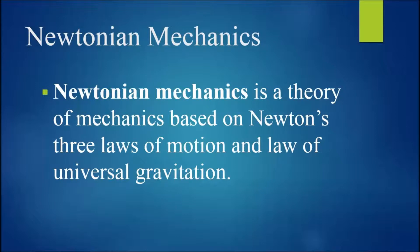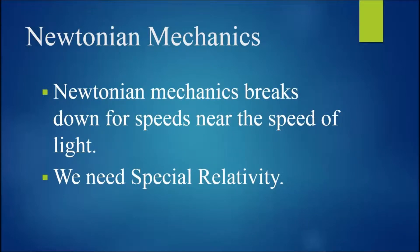So, Newtonian mechanics is a theory of mechanics based on Newton's three laws of motion and his law of universal gravitation. However, Newtonian mechanics breaks down for speeds near the speed of light. And so, in order to explain the motion of particles with speeds near that of the speed of light, we need Einstein's theory of special relativity.